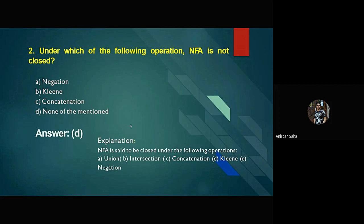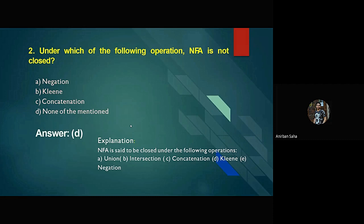The next question: under which of the following operations is NFA not closed? Three operations are given along with option D: none of the mentioned. The answer is none of the mentioned, because NFA is closed under union, intersection, concatenation, Kleene closure, and negation. For example, if A and B are NFAs, then the union of A and B is also an NFA.